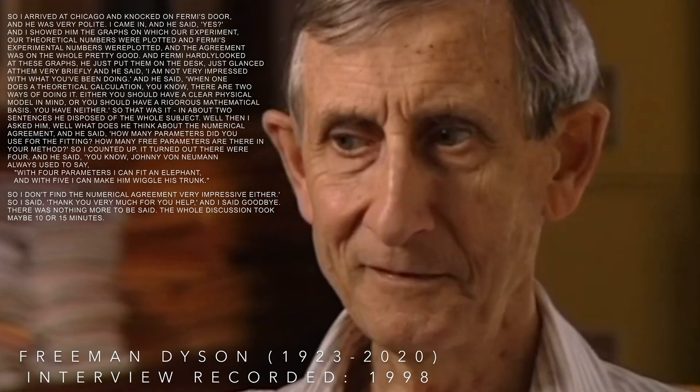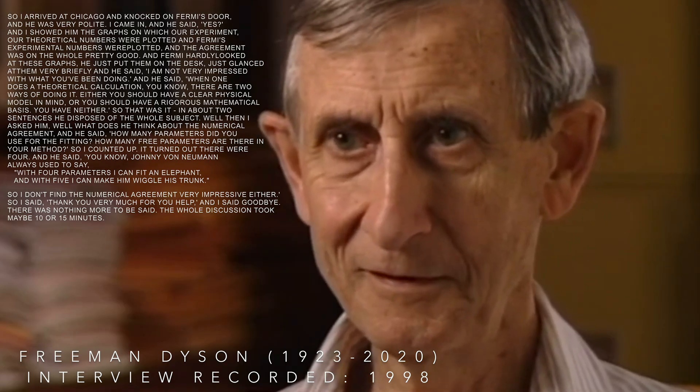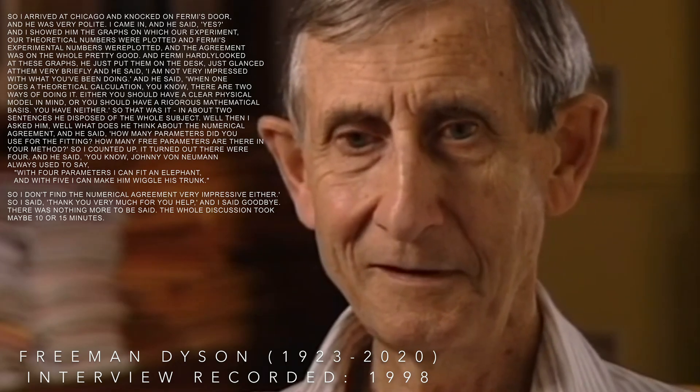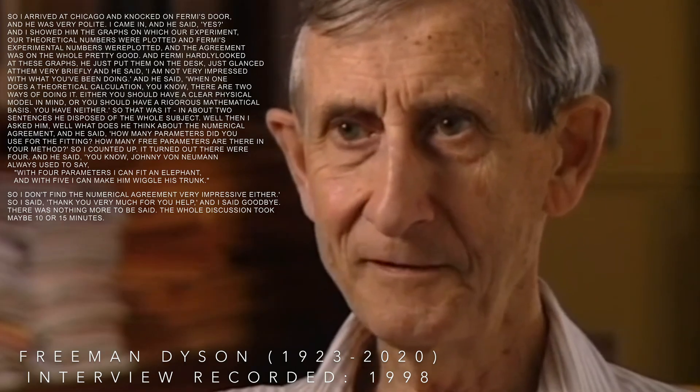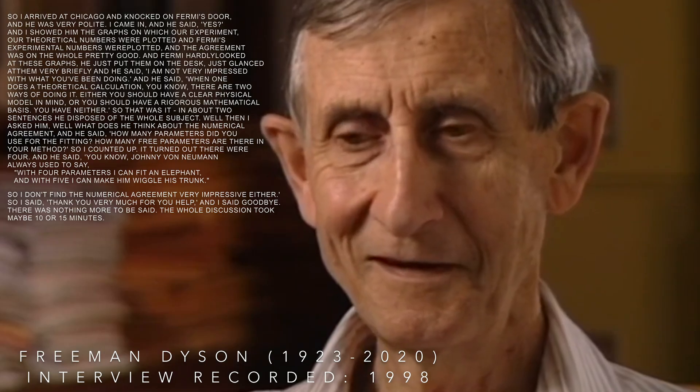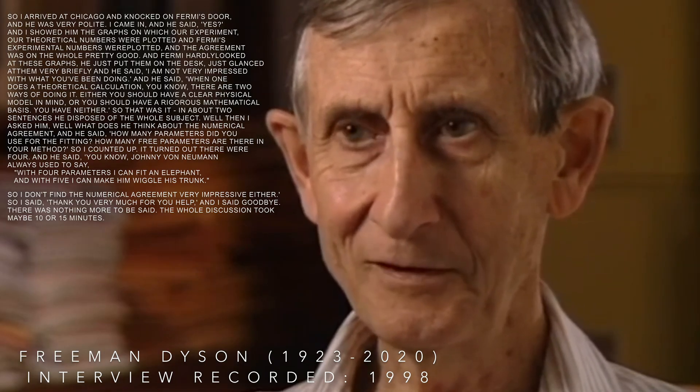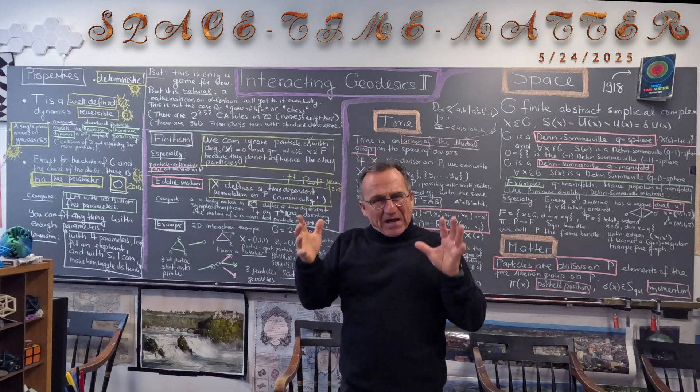So I counted up, it turned out there were four. And he said, you know, Jonathan Neumann always used to say, with four parameters I can fit an elephant. And with five I can make him wiggle his trunk. But here we have zero parameters, we have no choice.